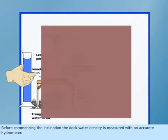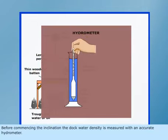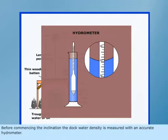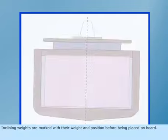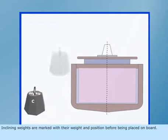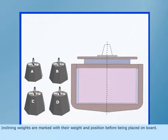Before commencing the inclination, the dock water density is measured with an accurate hydrometer. Inclining weights are marked with their weight and position before being placed on board.